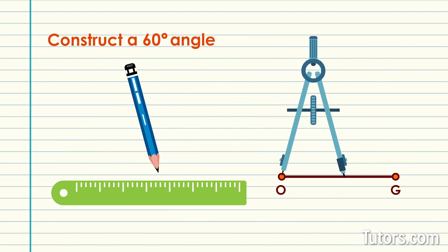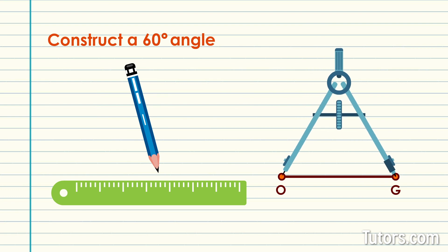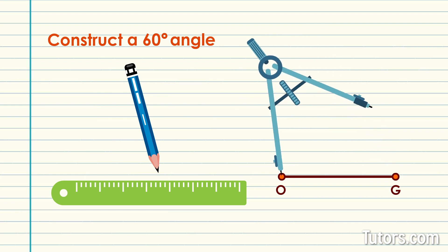Next, place the drawing compass needlepoint on point O and adjust it to meet point G. Swing an arc upward from point G high above the line segment.